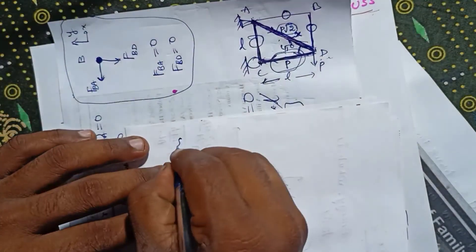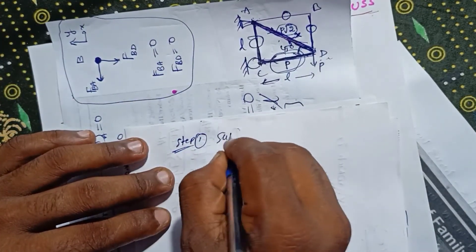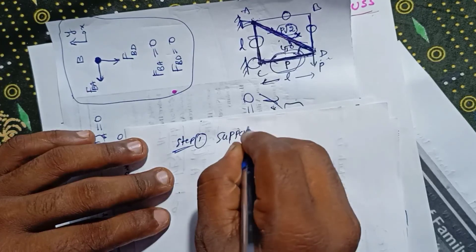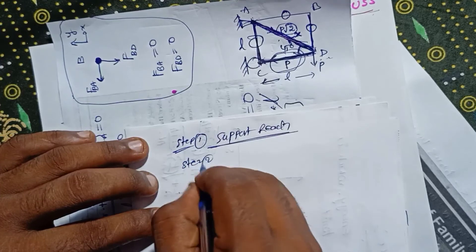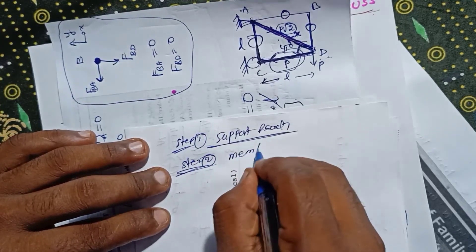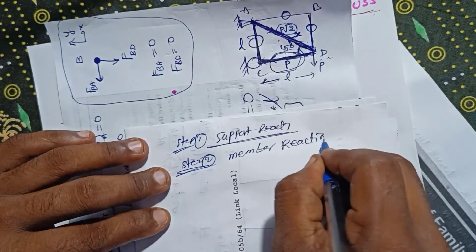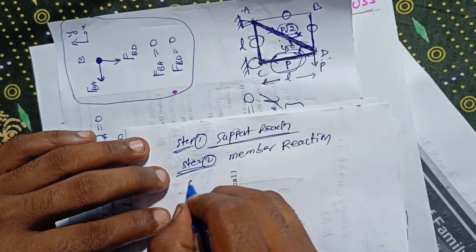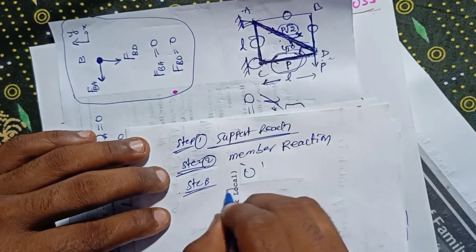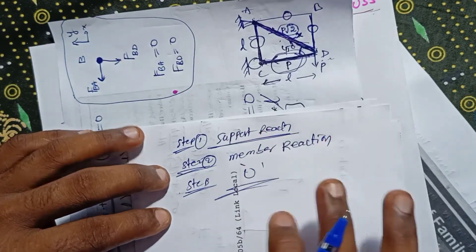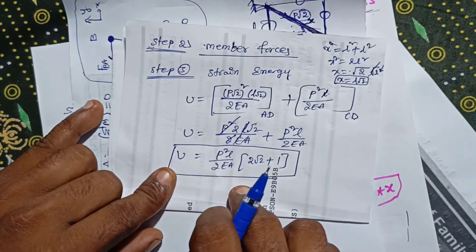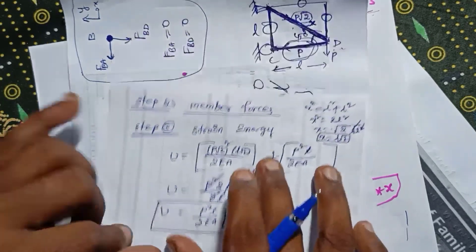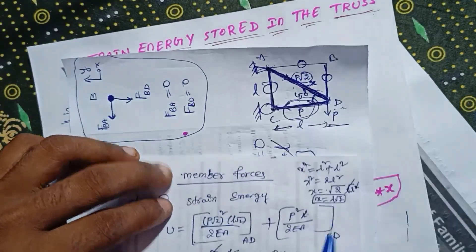So the strain energy stored in the truss is calculated. The procedure is: Step 1 - calculate support reactions, Step 2 - calculate member forces, Step 3 - calculate strain energy. This is all about strain energy stored in a truss when the truss is subjected to load P.